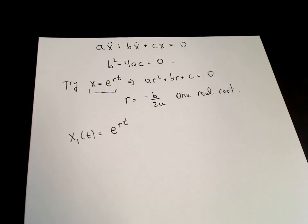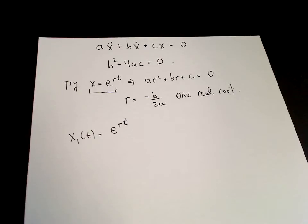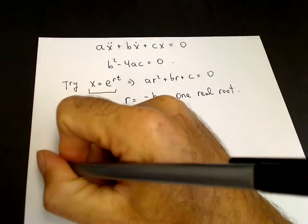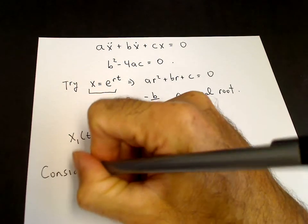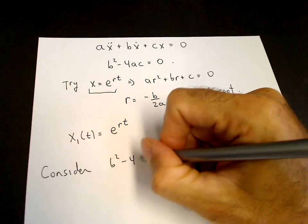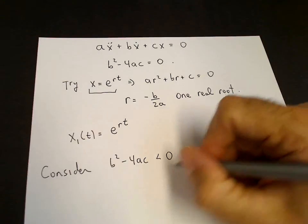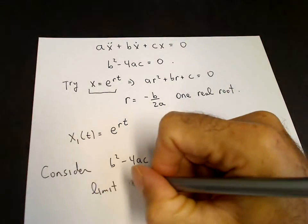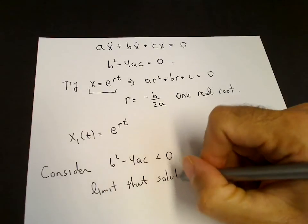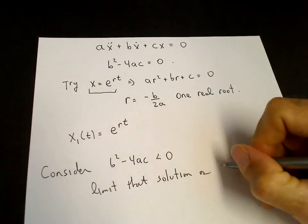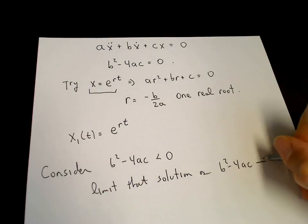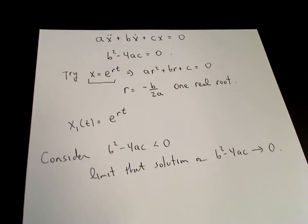The idea is to find the missing solution by a limiting process. We're going to consider the case when we have two complex conjugate solutions — when b squared minus 4ac is less than 0 — and then take the limit of that solution as b squared minus 4ac goes to 0.